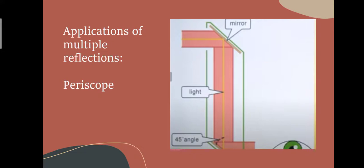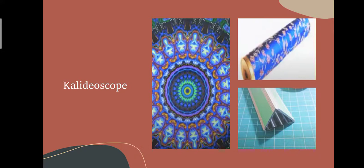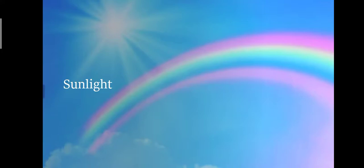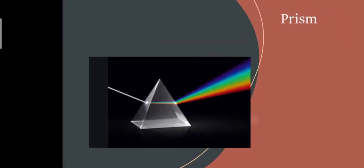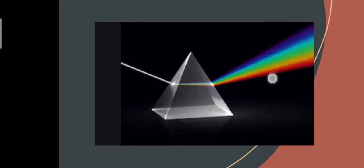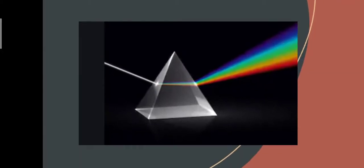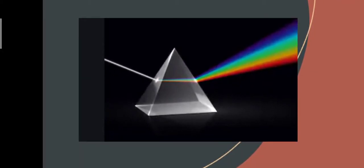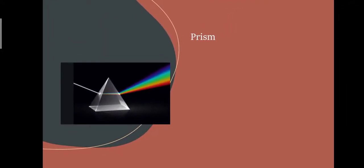Multiple reflections are not just for games — they have a real-life application: the periscope, which is an instrument using multiple mirrors. Moving ahead, sunlight — do you think sunlight is black or white? Let me tell you: sunlight is white in color. White light is composed of 7 colors, discovered by Sir Isaac Newton when he passed white light through a prism. The prism is a pyramid-shaped structure made of glass, and when white light passes through it, it disperses into its 7 constituent colors.